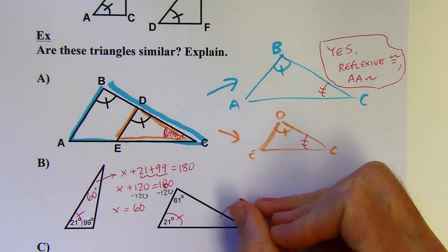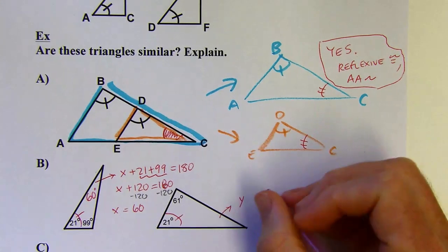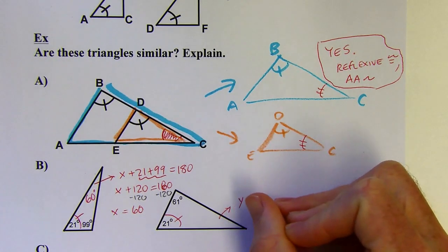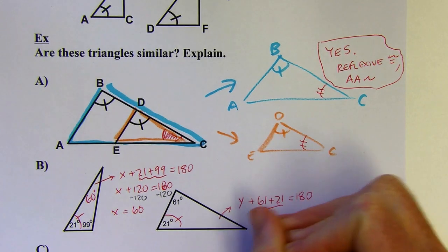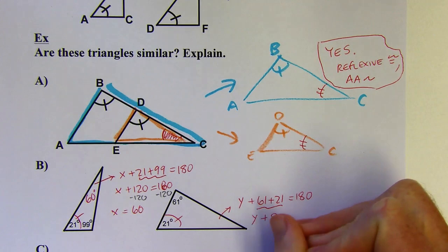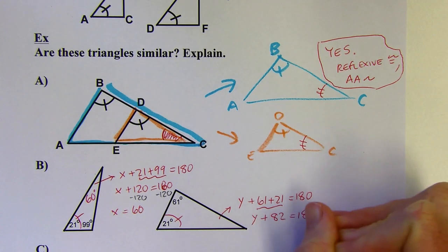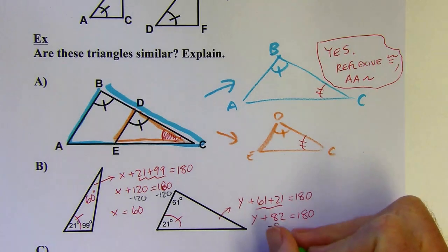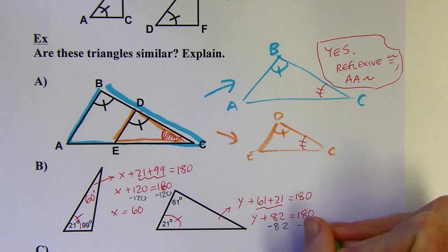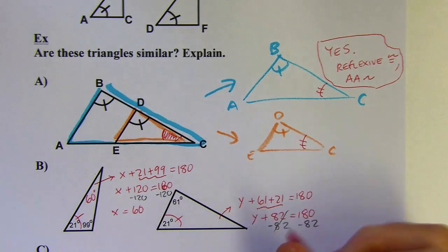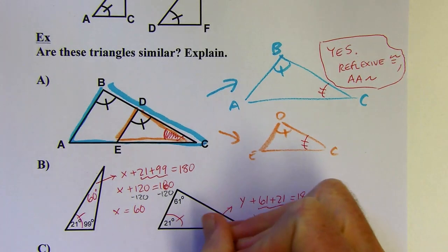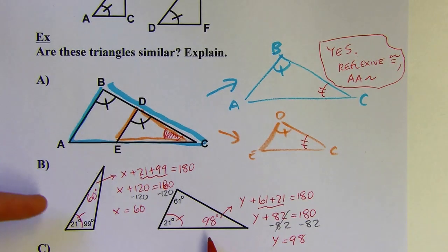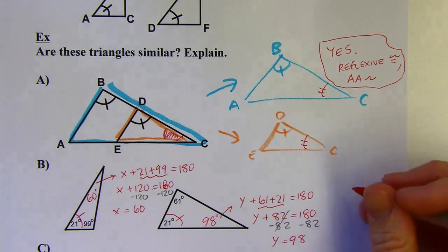I'll call this angle y just so I don't use the same variable. I'll combine like terms there and subtract 82. This comes out to 98 degrees and now I can see for sure I've only got one pair of congruent angles. That's not enough, so this is going to be a no.